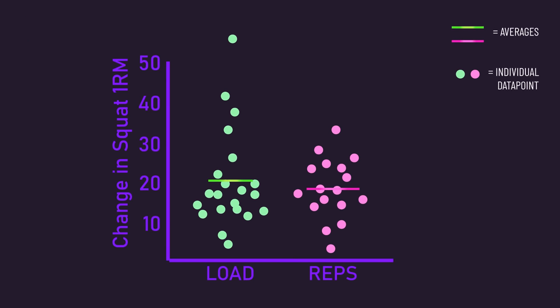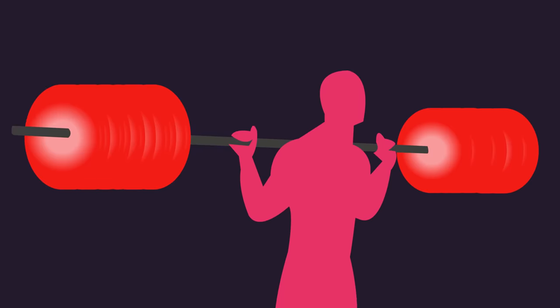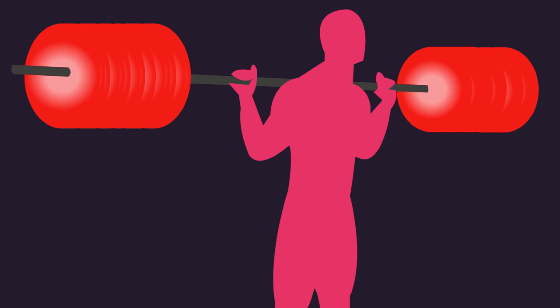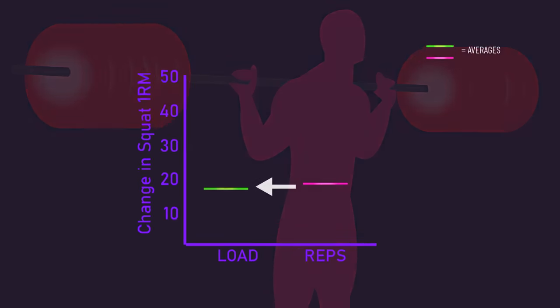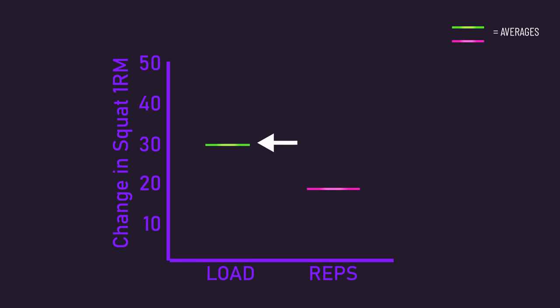As for the strength gains, Smith machine squat gains were fascinatingly very similar between both groups. The load group saw a minimal 2kg greater increase only. Given strength is based on lifting the heaviest load you can, I'm sure many would have expected the load group to have seen much more notably greater strength gains.